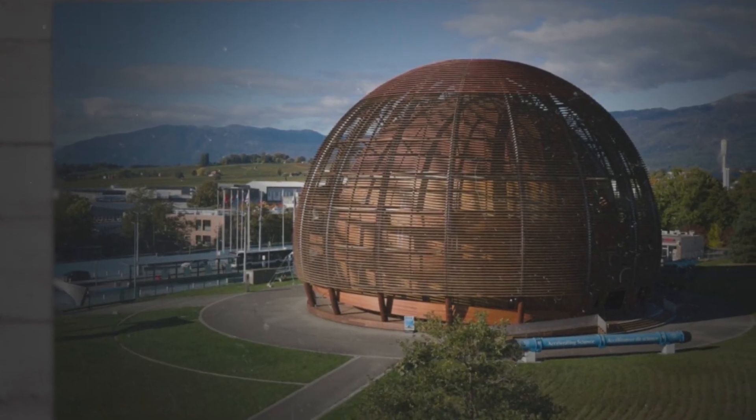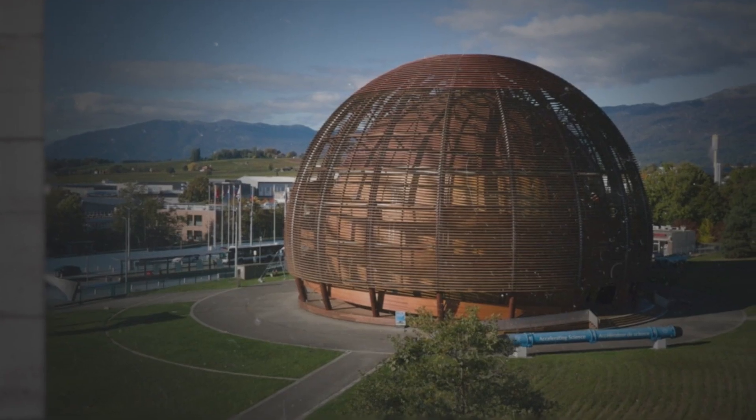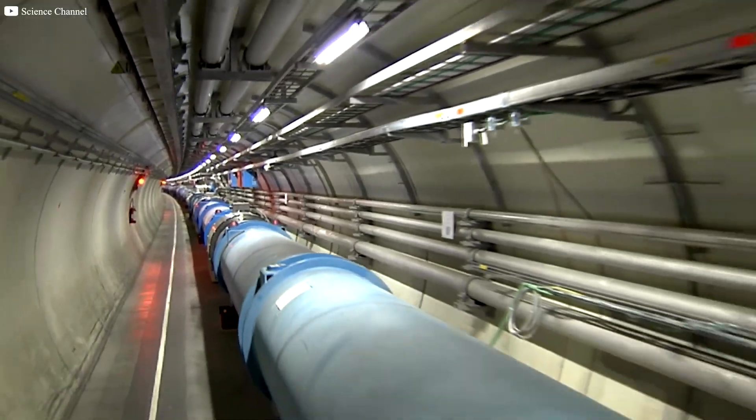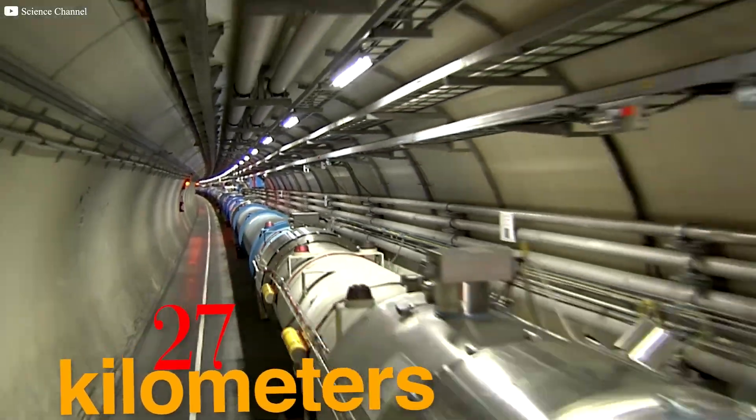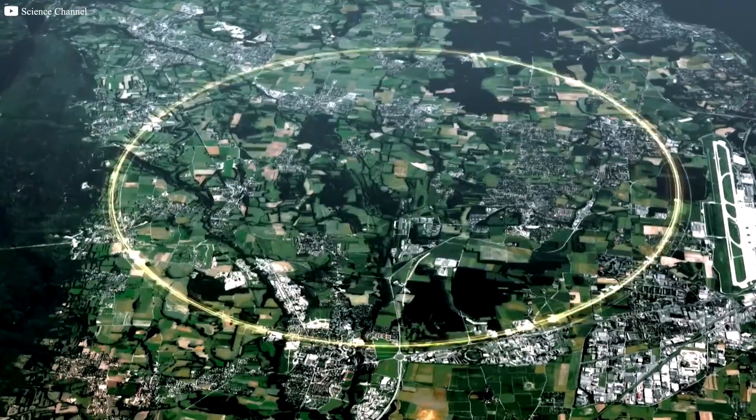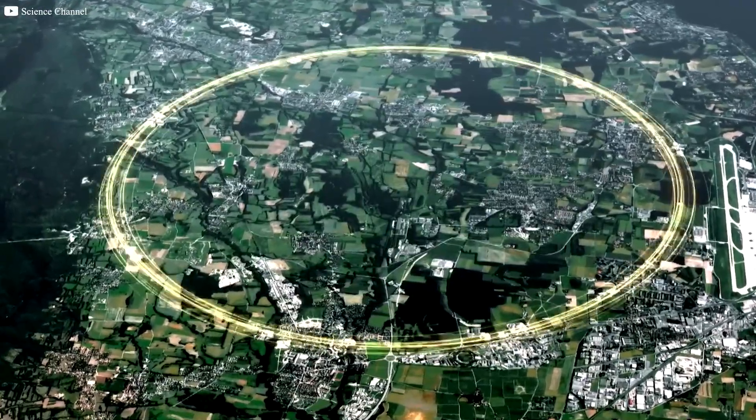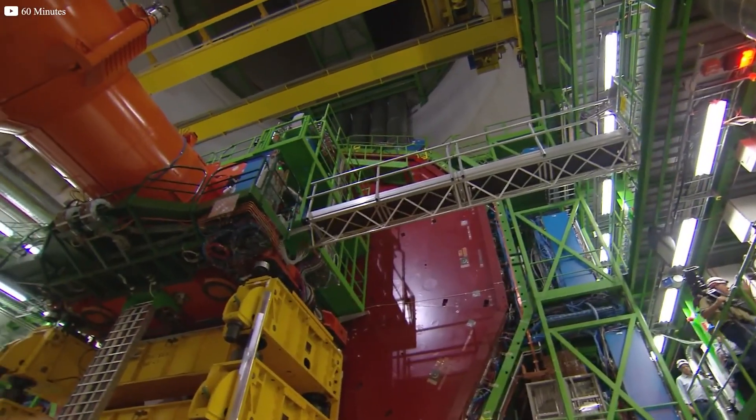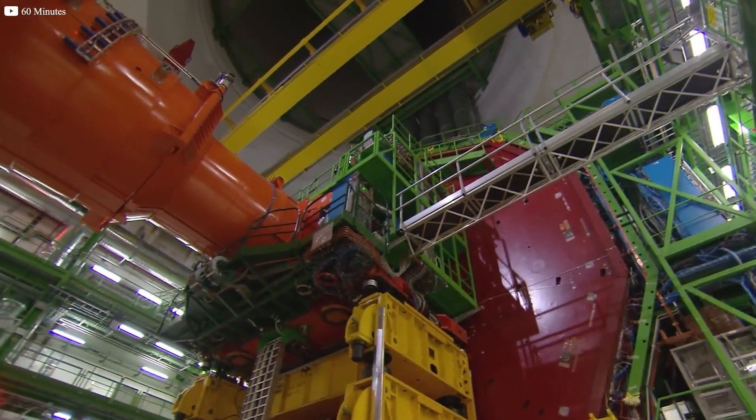CERN, the European Research Center near Geneva, took on the challenge. What they built was staggering. A circular tunnel 27 kilometers long was dug deep under farmland and the Swiss-French border. The price reached $9 billion, and the project took a decade with tens of thousands of workers involved.